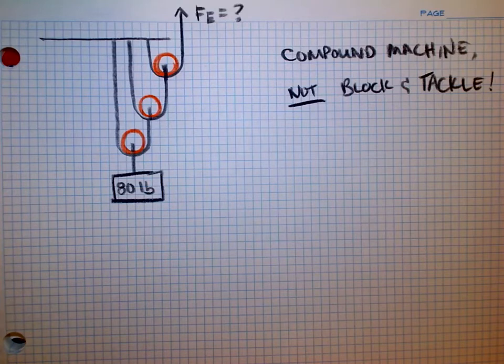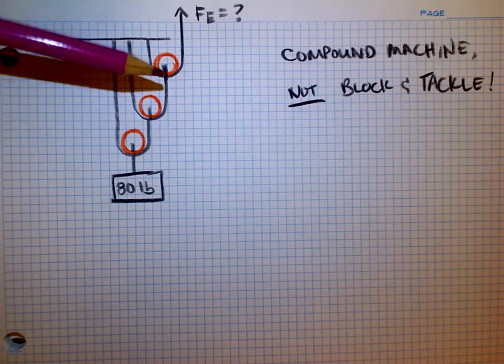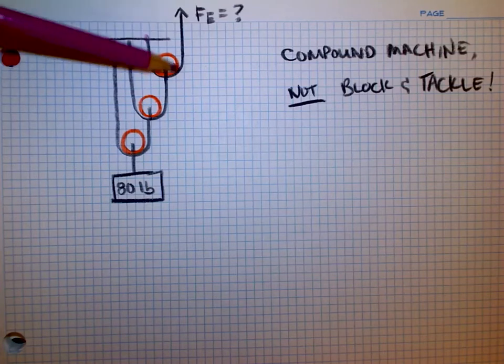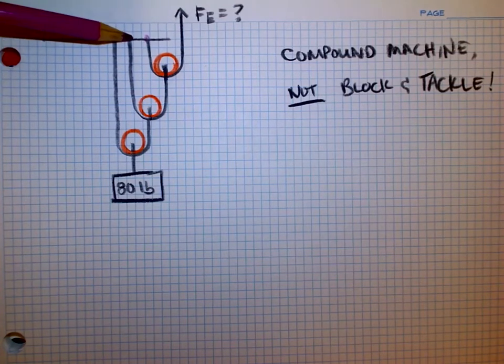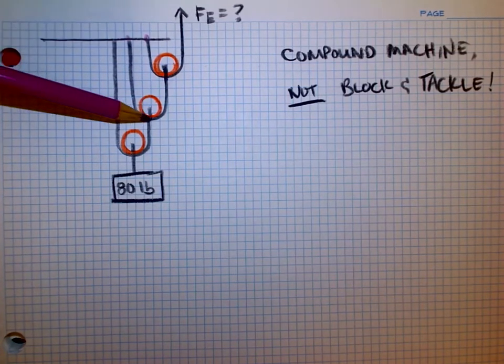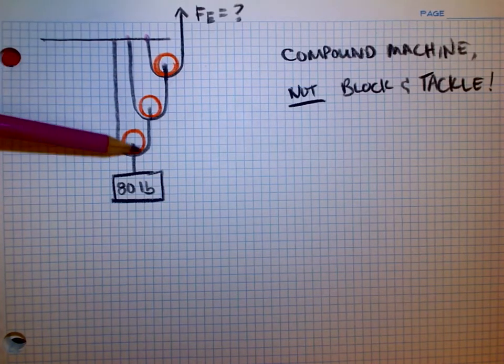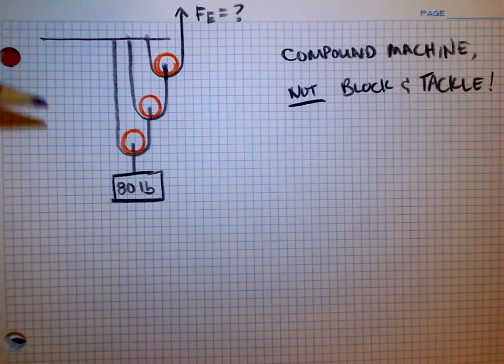The reason I know this is because a block and tackle has a single rope and this looks like I have three different ropes. See one right here that's secured here on the ceiling and I'm looping around and pulling it up. A second rope that's secured around the ceiling, looping around, I'm pulling up and attaching to the first pulley. A third rope here looped around attached to this pulley. So there's three different ropes here which means it's not a block and tackle.